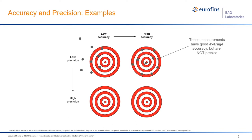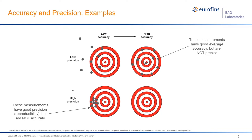High accuracy but low precision means the measurements have a good average but aren't reproducible — though by doing many tests you can arrive at the true value. Low accuracy but high precision means the measurements are reproducible but not correct in absolute terms. However, we can take advantage of precision by making comparisons: good versus bad, process one versus process two, sample one versus sample two. In failure analysis, especially near the surface, precision is more powerful than accuracy.